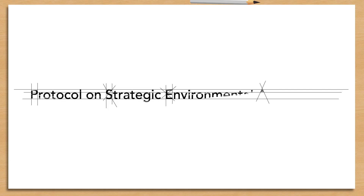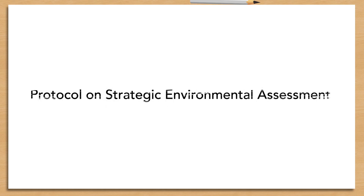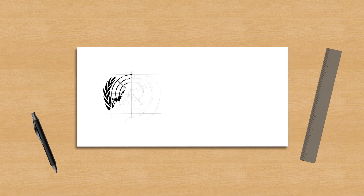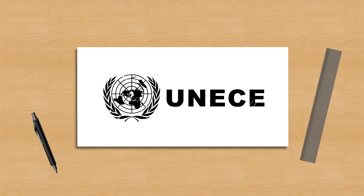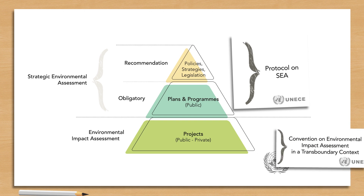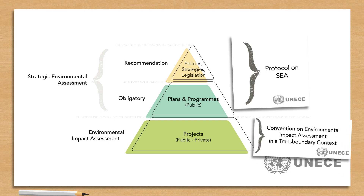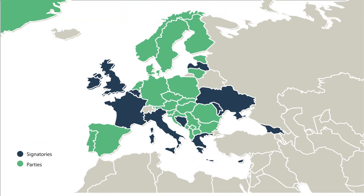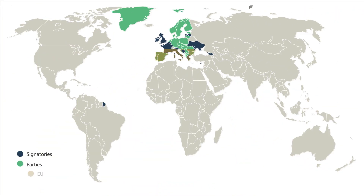The Protocol on Strategic Environmental Assessment is an international agreement under the auspices of the United Nations Economic Commission for Europe and provides a legal framework for SEA procedures across countries that have joined the agreement. It was negotiated in 2003 to complement the Convention on Environmental Impact Assessment in a trans-boundary context, also called the ESPO Convention. The protocol is in force since 2010 and is open to all member states of the United Nations, and is similar to the European Union's directive on SEA.